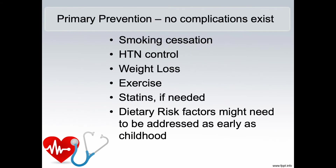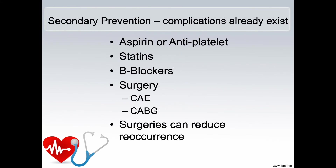Prevention of atherosclerosis is divided into primary and secondary interventions. Primary prevention occurs when no complications yet exist, and includes smoking cessation, hypertension control, weight loss, exercise, and statins if needed because cholesterol levels do not fall with increased activity alone. These dietary risk factors may need to be addressed as early as childhood. Secondary prevention occurs when complications already exist. At that point, you should start the patient on aspirin or an antiplatelet aggregate, statins, beta blockers, and they may need surgery including carotid endarterectomy or coronary artery bypass and grafting, as surgeries can reduce the reoccurrence of the symptomology and conditions caused by atherosclerosis.